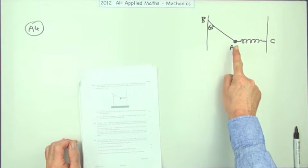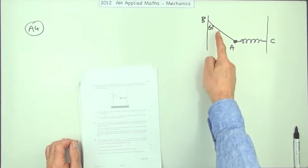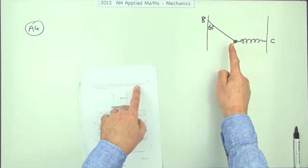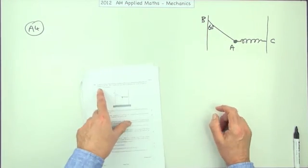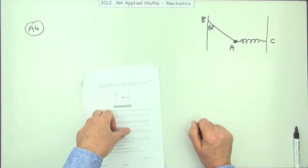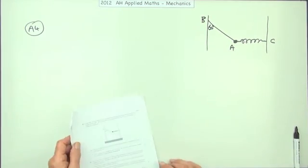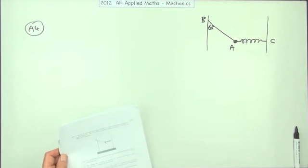This little weight here is held in equilibrium by this inextensible string, light, meaning it's got no weight so you don't have to consider its mass, and a light spring, again light so you don't have to consider its mass in relation to the weight of the object A, which is one kilogram.